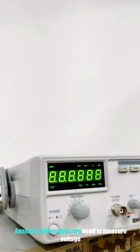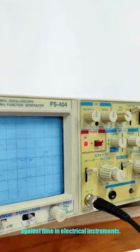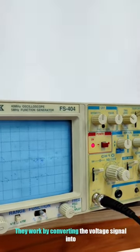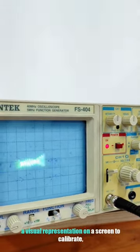Analog oscilloscopes are used to measure voltage against time in electrical instruments. They work by converting the voltage signal into a visual representation on a screen.